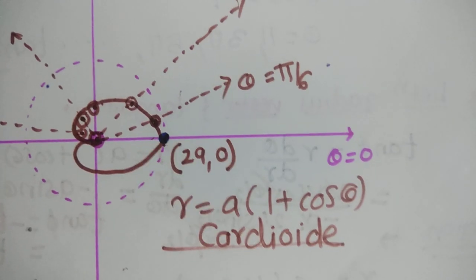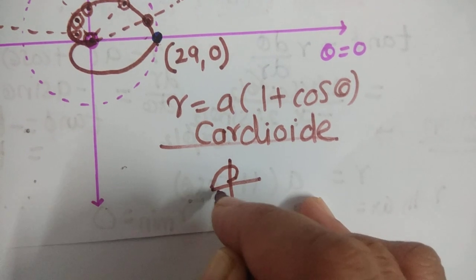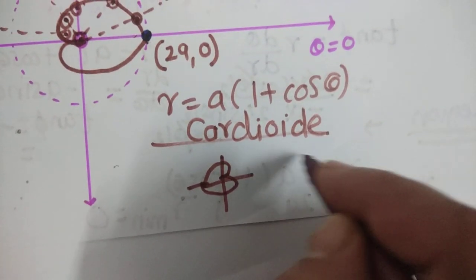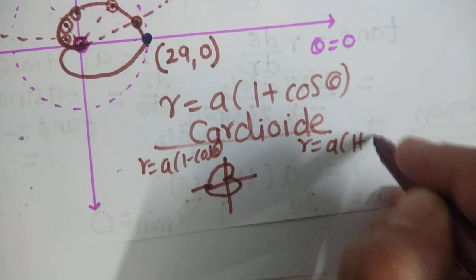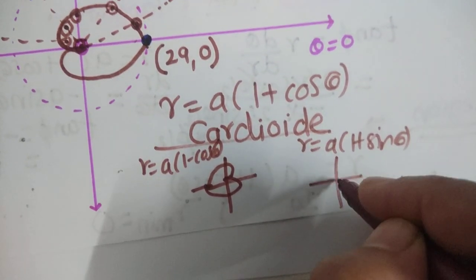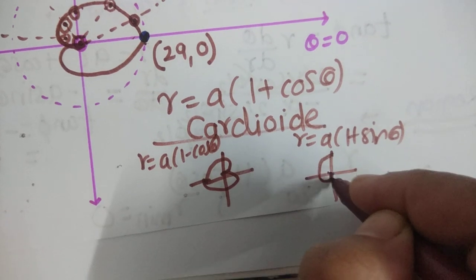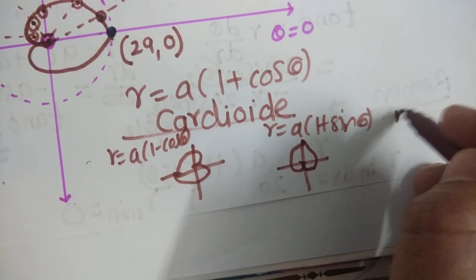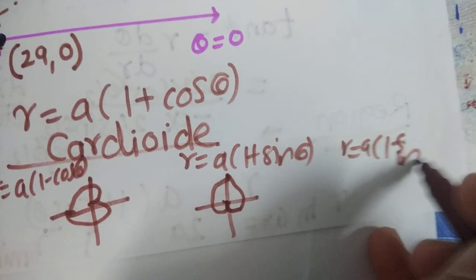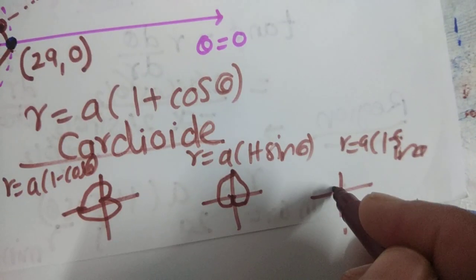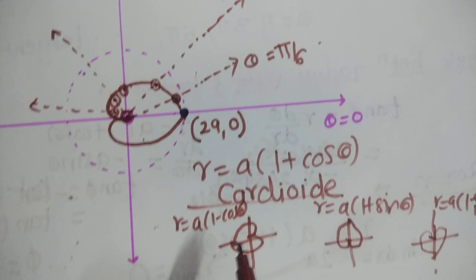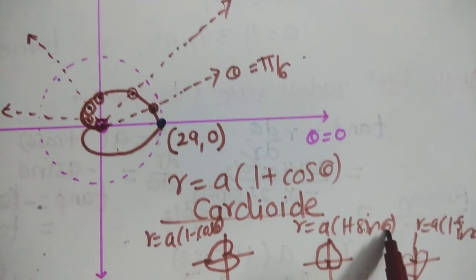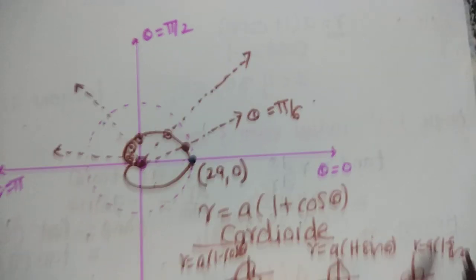Similarly, you can trace r = a(1 − cos θ), which is on the left side. If r = a(1 + sin θ), the curve is on the upper part. And r = a(1 − sin θ) gives the curve on the lower part. So in this way you can draw all four variants of the cardioid.